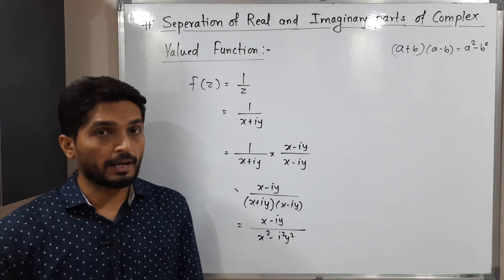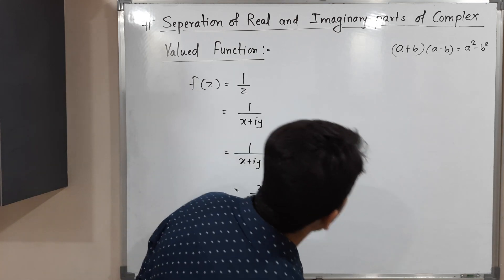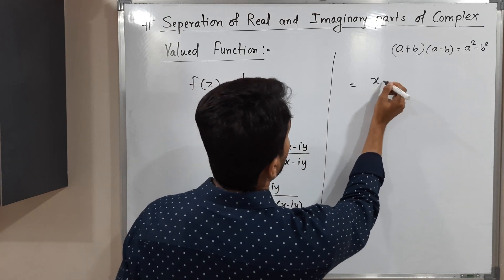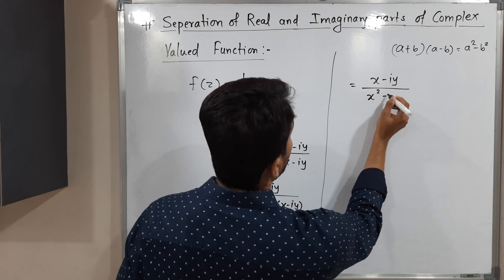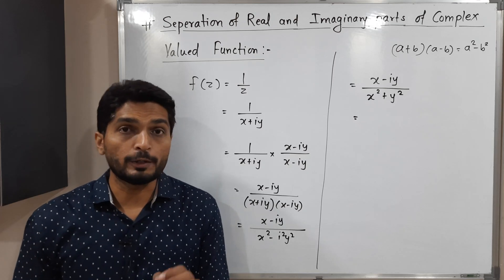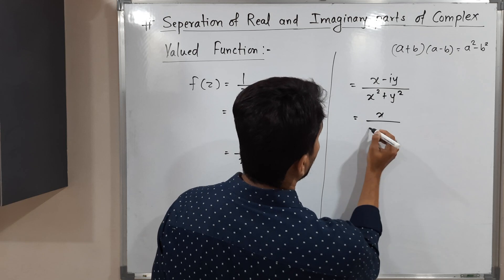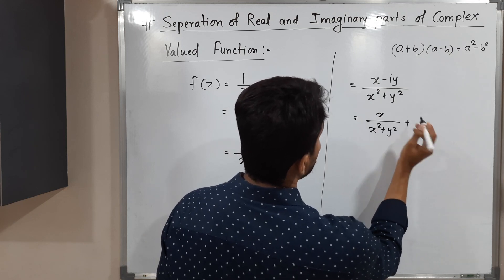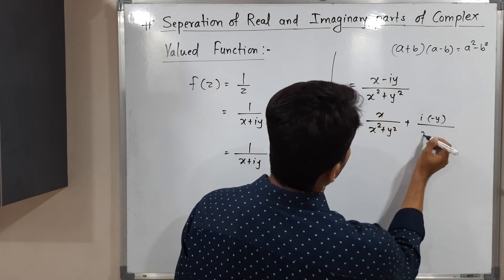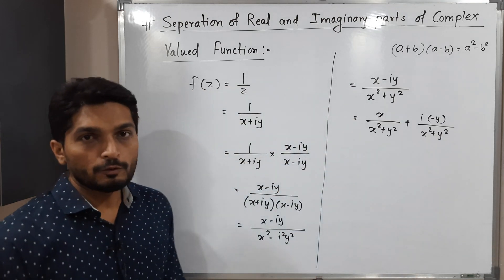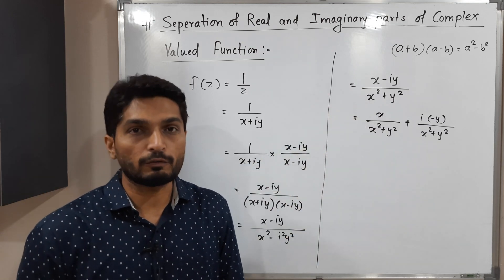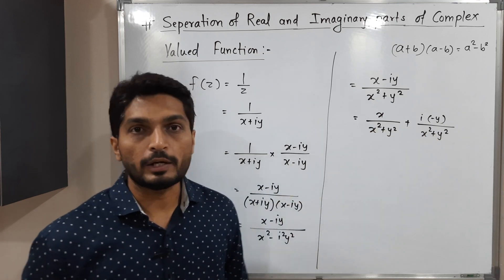We now separate the real and imaginary parts by dividing the numerator terms individually by the denominator. Writing it in standard form a plus ib, we get x over (x squared plus y squared) for the term without i, and minus y over (x squared plus y squared) as the coefficient of i. The first term is the real part and the second term is the imaginary part.